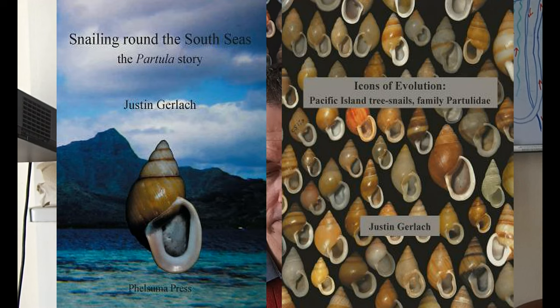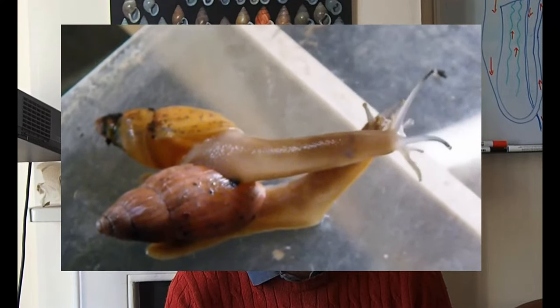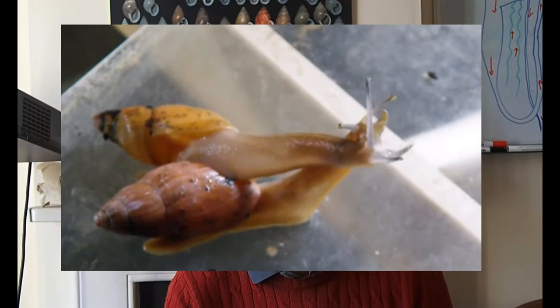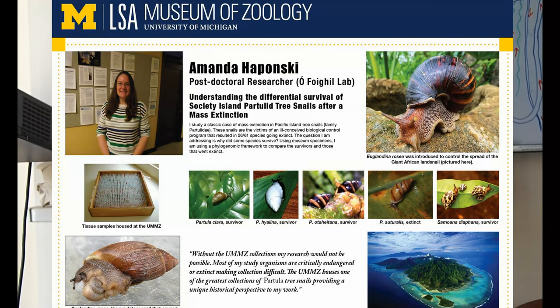A very large part of my research career has been spent working on the partular tree snails of the South Pacific. The release of a predatory snail on many islands led to the extinction of over 30 species within just a few years. But when these snails were still common, many were collected for museums. We've been able to extract DNA from these to clarify their evolutionary relationships, and I've been able to dissect specimens preserved, in some cases over 100 years ago, to find out about their breeding ecology and what they ate.